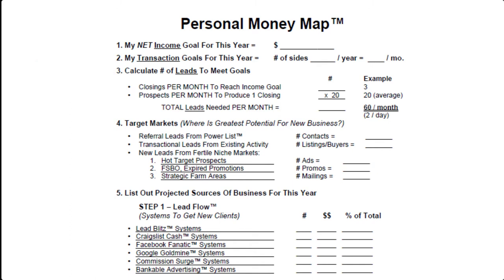you probably need roughly 36 closed sides per year, or an average of about three per month. Now to calculate the number of leads, we're going to use an average of 20.